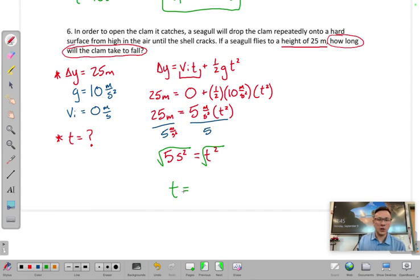Looking at sig figs here, I guess we have two sig figs. So we'll go 2.2 seconds. But if you were to put 2.24 seconds, I'm not going to count you incorrect for that.